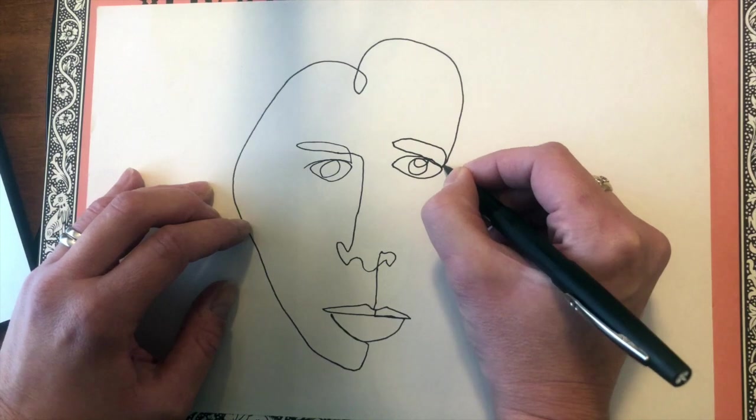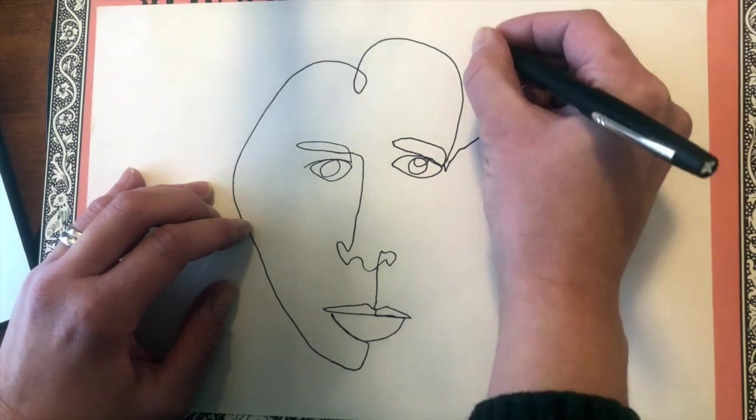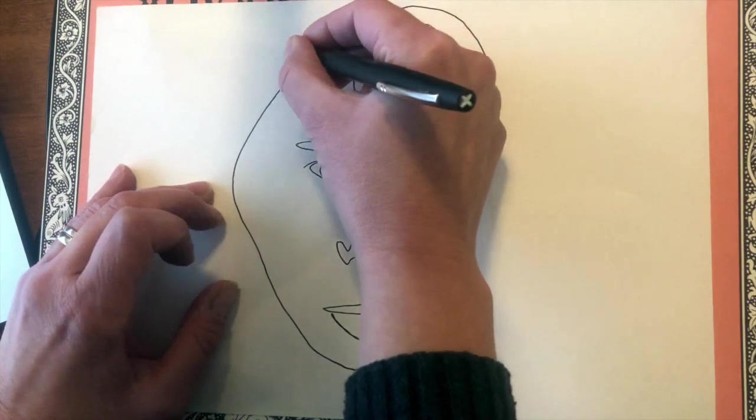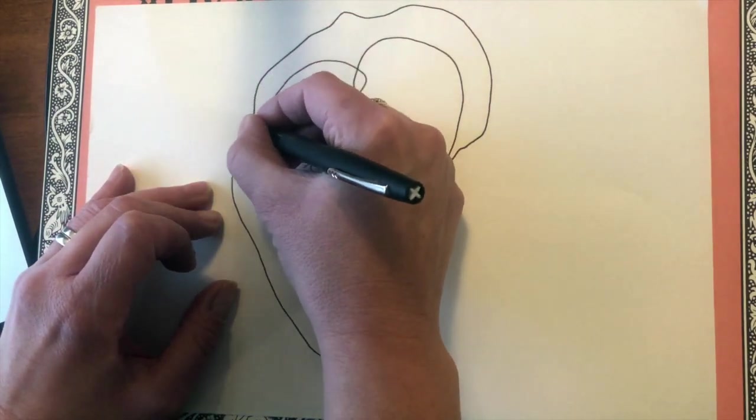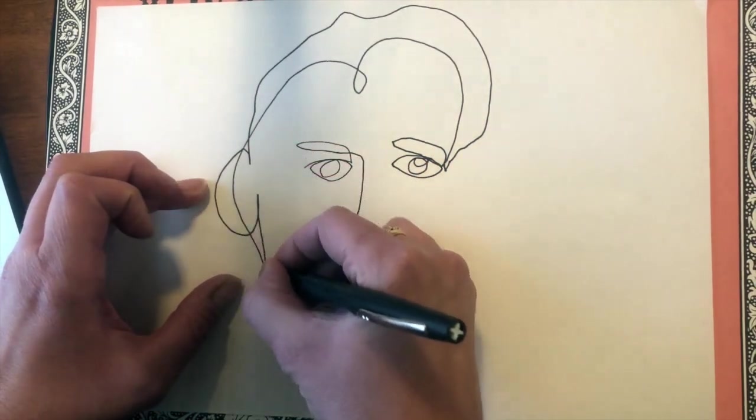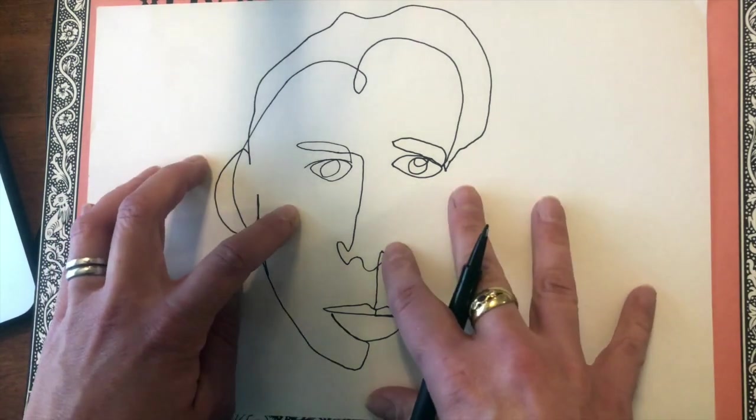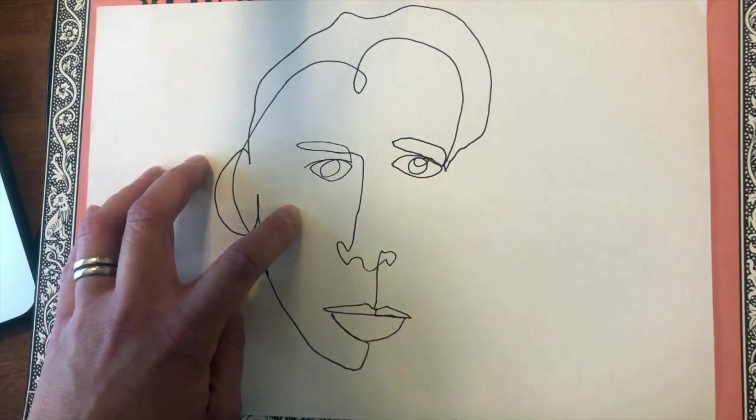You're not necessarily worrying too much about perfection as much as trying to get that image figured out. There is a face with one continuous line.